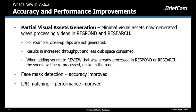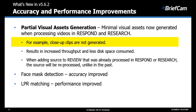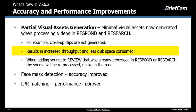Now let's look at the accuracy and performance improvements. We now have partial visual assets generation, meaning that by default only the minimal visual assets are generated when we process videos in the respond and research modules. For example, close-up clips are not generated, and this can increase the real-time processing capacity by 15 percent and also save disk space.